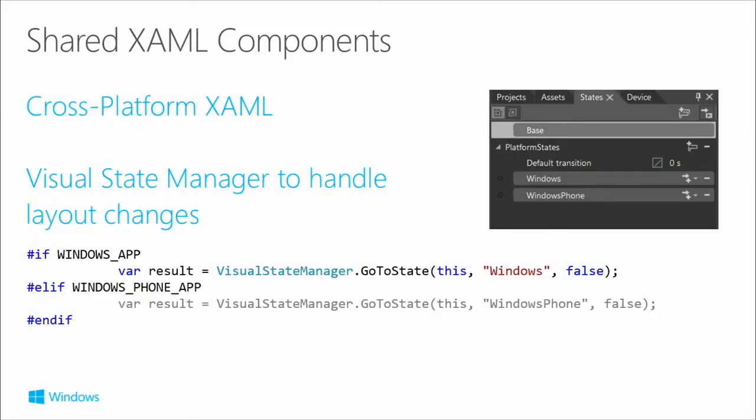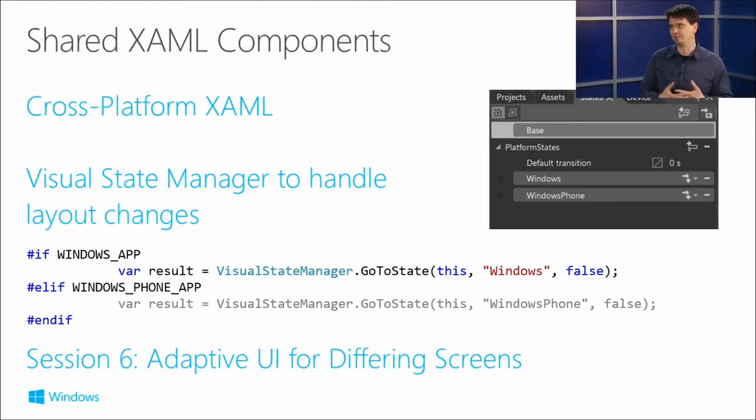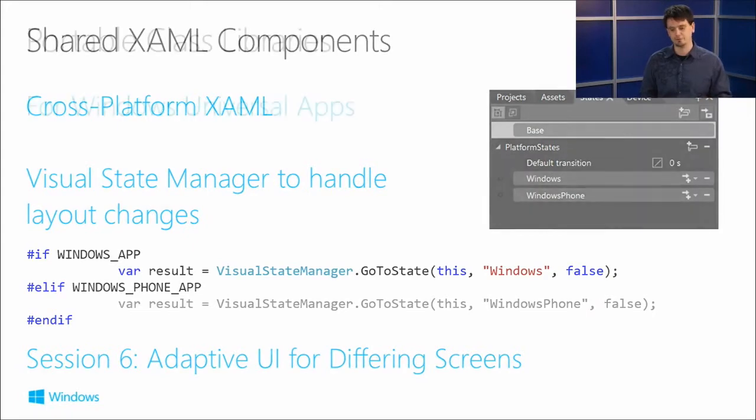We'll see how the Visual State Manager is used in the next demo. And in the code-behind you simply say, if I'm in a Windows app go to the Windows visual state, if I'm in a Windows Phone app go to the Windows Phone state. For more information about adaptive UI beyond this simple binary switch, check out session six on adaptive UI for different screens.